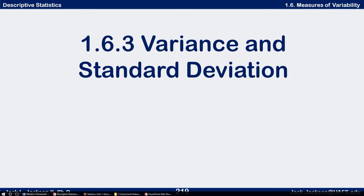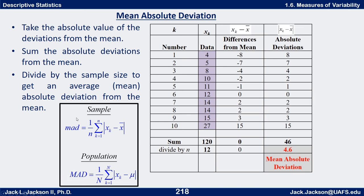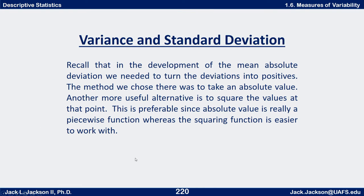In this video we're going to be talking about the concepts of variance and standard deviation, which are the most commonly used measures of variability. In an earlier video we looked at the range, which is a very crude measure of variability. We want something more sophisticated that takes into account every data value. The mean absolute deviation used absolute value to make deviations positive; squaring them instead leads to variance and standard deviation.